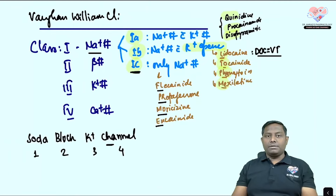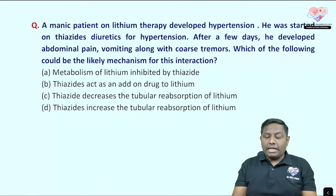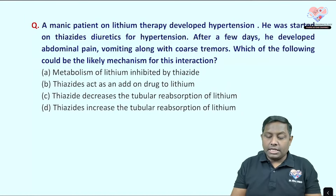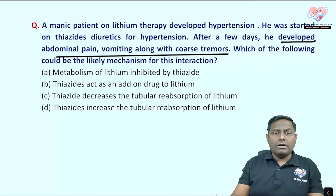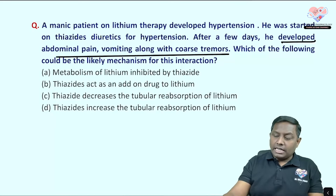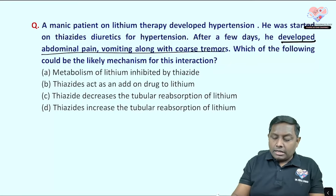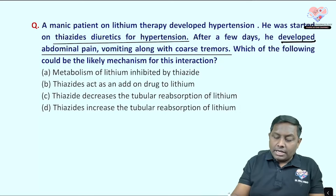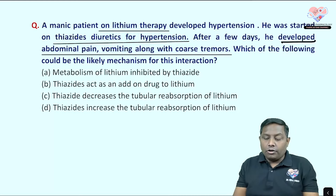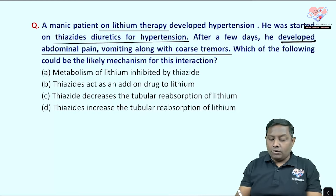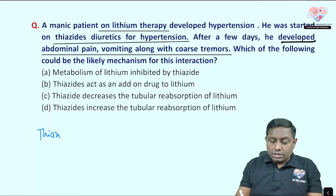The next question: a manic patient on lithium therapy develops hypertension and is started on thiazide diuretics. After a few days, he develops abdominal pain, vomiting, and coarse tremor — signs of lithium toxicity. The question asks for the likely mechanism of this drug interaction.